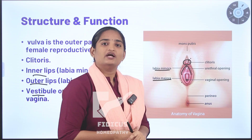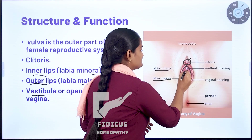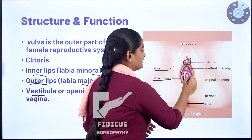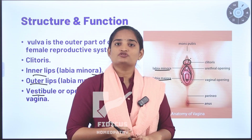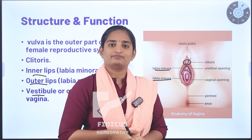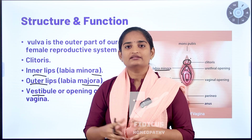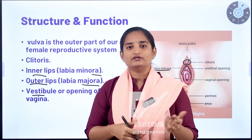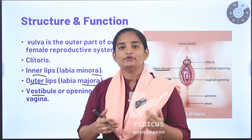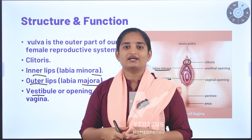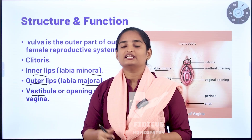Now coming to the vestibule. The vestibule is an area without hair, and it lies between the labia minora. This is the vestibule area — it is the opening of the vagina. Through the vestibule, urination, menstrual blood flow, and childbirth take place. The vulva is not a single part — it consists of a group of structures: the clitoris, labia majora, labia minora, and vestibule. These structures help in urination, passing menstrual blood, and childbirth. By knowing these structures, we can better understand Vulvodynia and other health issues.